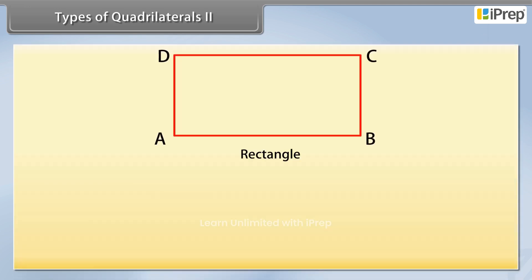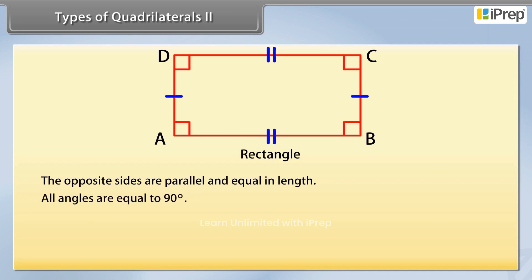Now come to rectangle. In a rectangle, the opposite sides are parallel and equal in length, and all angles are equal to 90 degrees. Here AB is parallel to CD and AD is parallel to BC. And the angles A, B, C and D are 90 degrees. So ABCD is a rectangle.